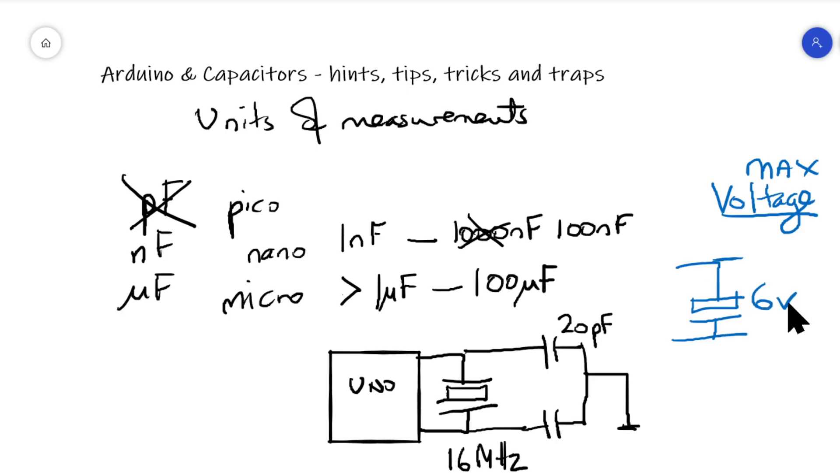And this is, I would say, borderline in an Arduino environment, six volts. It'd be better, instead of six, to use a 10-volt capacitor, 10-volt rated capacitor. So that's double the voltage line.